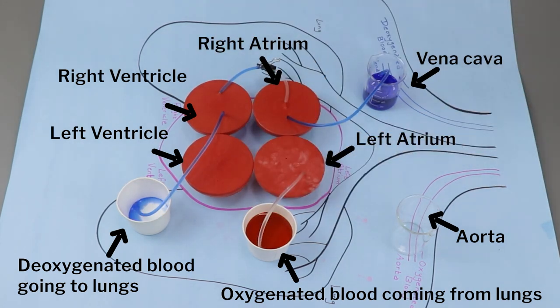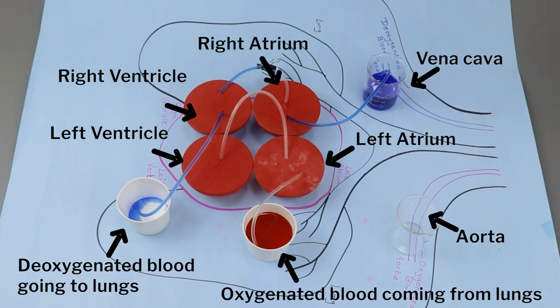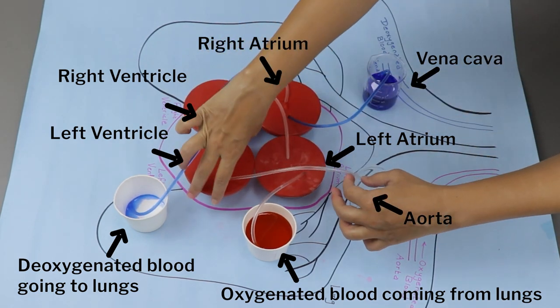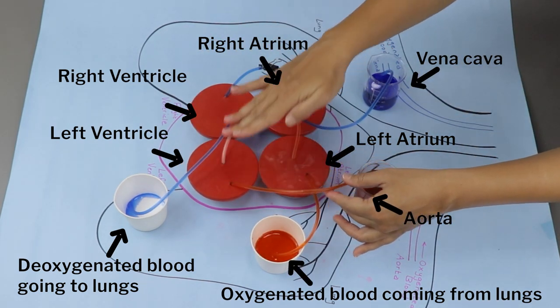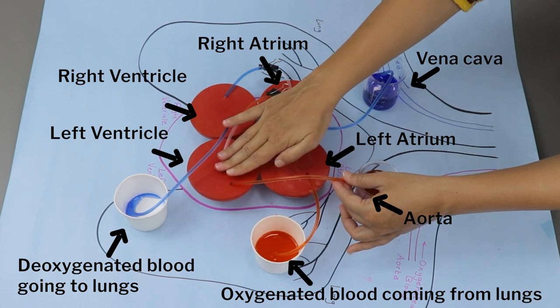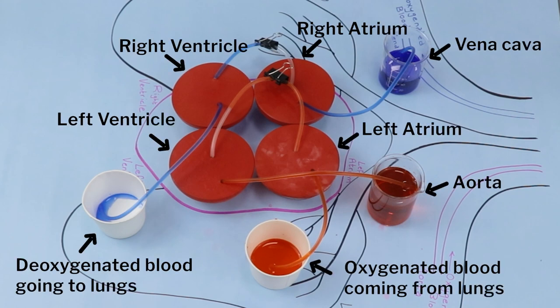Similarly, connect the lungs to the left atrium, and the left atrium to the left ventricle, and then to the aorta. Show the pumping of blood from the lungs to the left atrium, to the left ventricle, and then to the aorta by pressing the balloon. This is how the oxygenated blood and the deoxygenated blood circulate in the system.